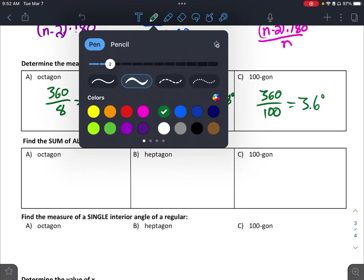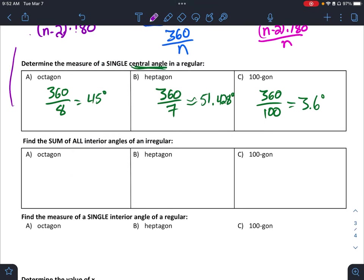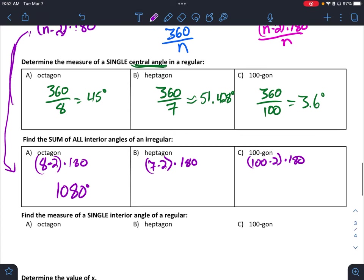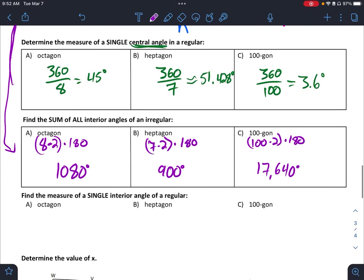When I want the sum, this one is going here. So I have 8 minus 2 times 180. 7 minus 2 times 180. 100 minus 2 times 180. And this gets me 1080 degrees. 900 degrees. 17,640 degrees.